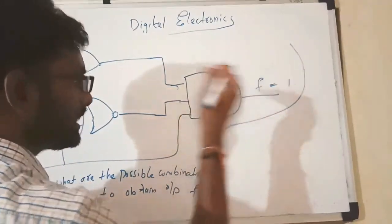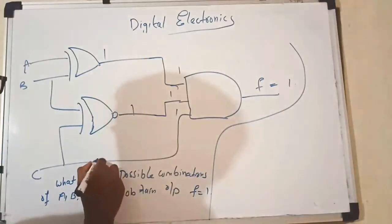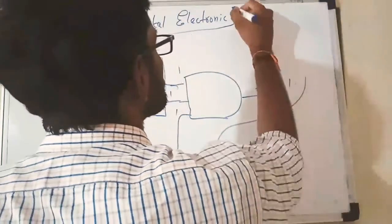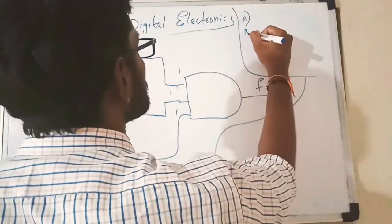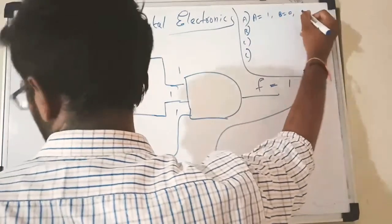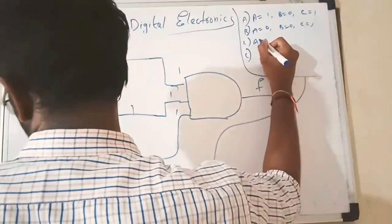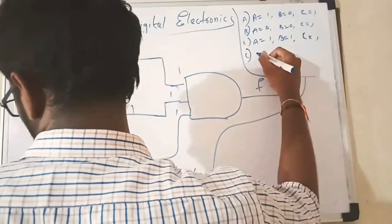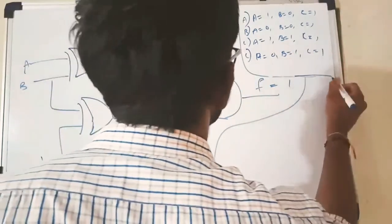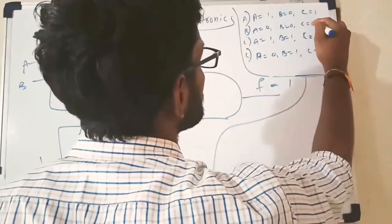This is a NAND gate and at the NAND gate the output is 1, so all the inputs must be 1. The options are: A=1, B=0, C=1; second option A=0, B=0, C=1; third option all are 1s; last option A=0, B=1, C=1. Checking: all options have C equal to 1, so check the remaining values.